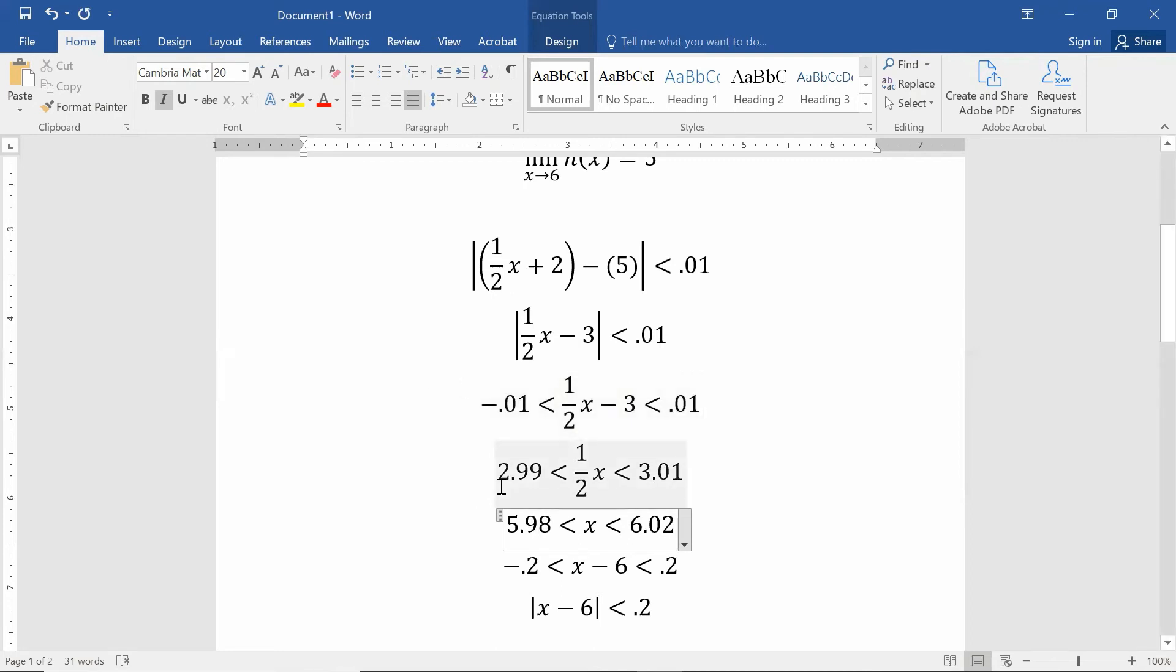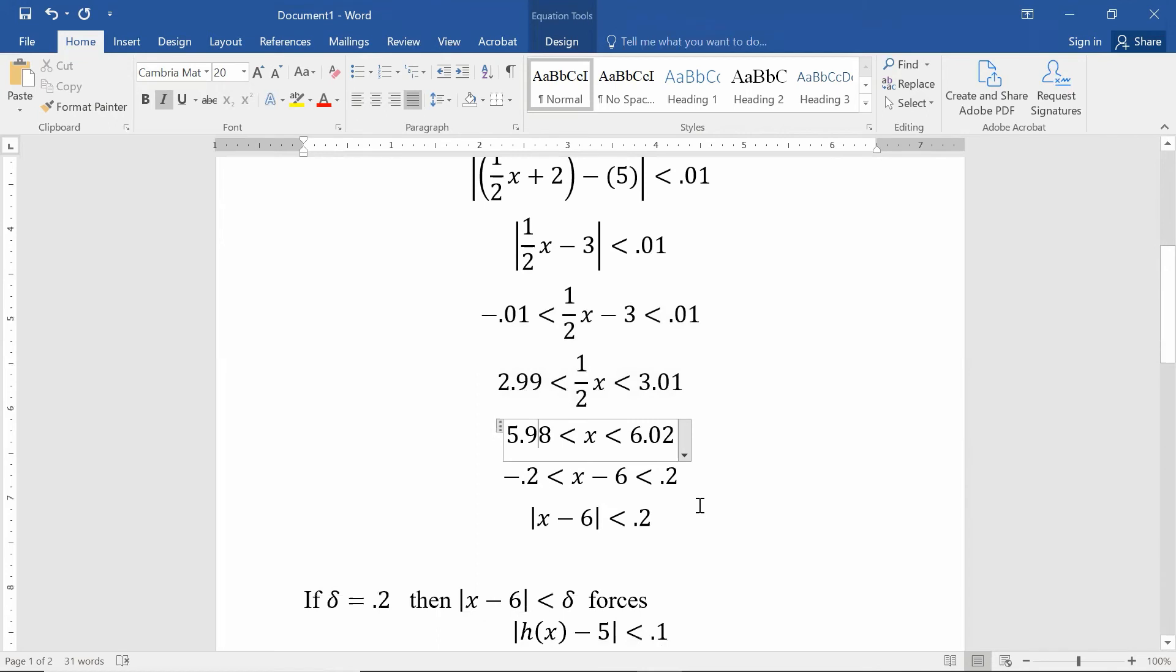So when I multiply 2.99 times 2, I get 5.98. When I multiply 1/2x by 2, I just get x. And when I multiply 3.01 by 2, I get 6.02. If I subtract 6 from all three sides, I get 0.02, which means I wanted my absolute value of |x - 6| to be less than 0.02, and that would be equivalent to saying my output minus 5 is less than 0.01.